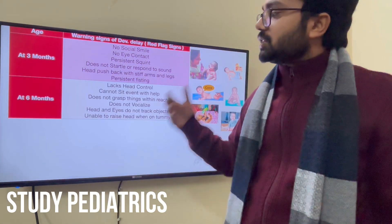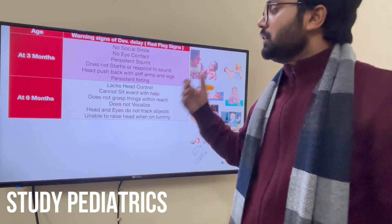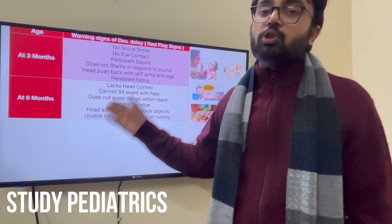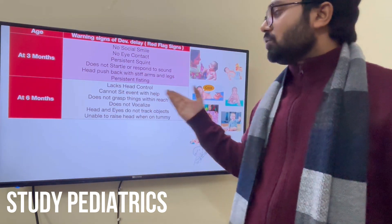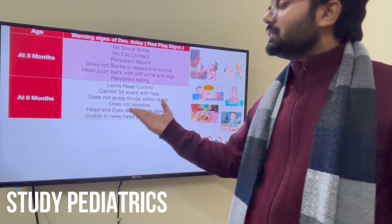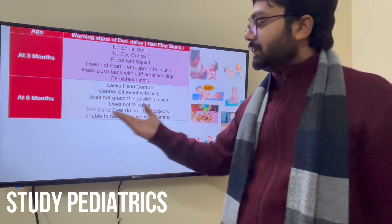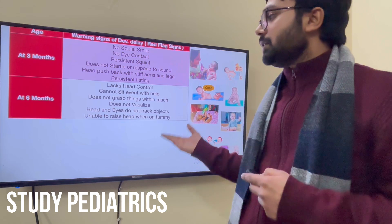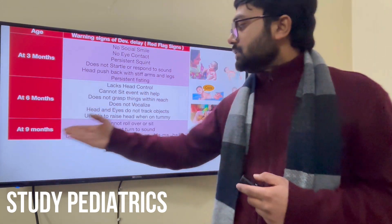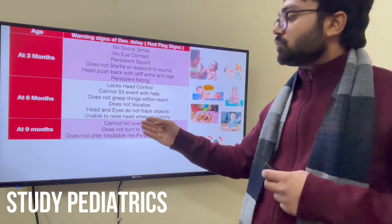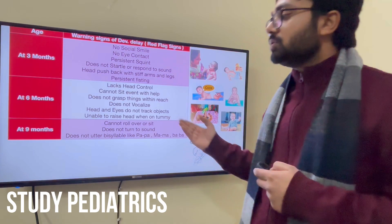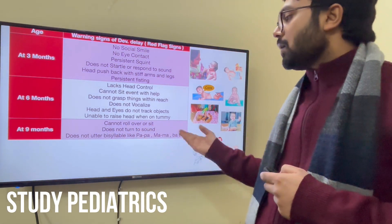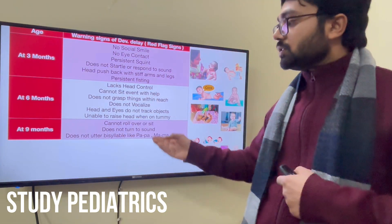At 6 months, red flags include: still lacking head control, cannot sit even with help, does not grasp objects, does not vocalize, head and eyes do not track objects, and unable to raise the head when on tummy. At 9 months, red flags include: cannot roll over (which should have come at 4 months), does not turn to sound, and does not utter bisyllables like 'ba' or 'ma' (which should have come at 6 months). So at 9 months, these are danger signs.